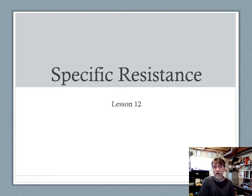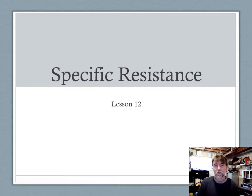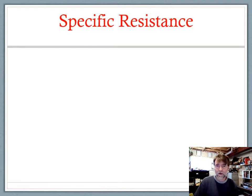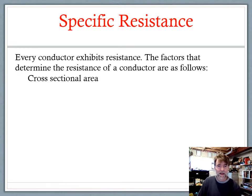At this point, hopefully you're comfortable with calculating the circular mil area and talking about the cross-sectional area of a conductor, so that we can carry on with the conversation about how much resistance that conductor offers based on its characteristics. Today's lesson — lesson 12 — is specific resistance. Let's go back and talk about where the conversation started, which said that there are four factors which influence how much resistance a conductor offers in a circuit.